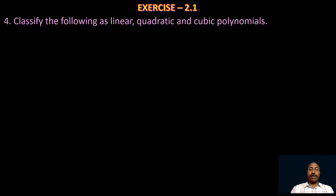Take the first one: 5x² + x − 7. The highest power of the variable is 2 — the degree of 5x² is 2, the degree of x is 1, and the degree of the constant term is 0. So the degree of the given polynomial is 2, and since the degree is 2, it is a quadratic polynomial.